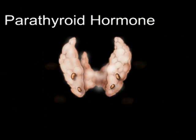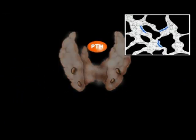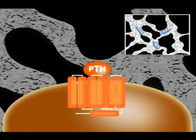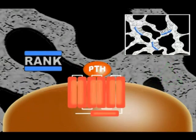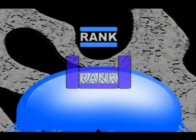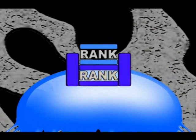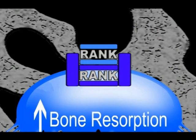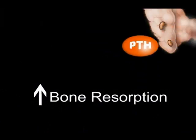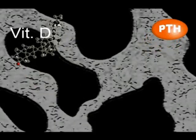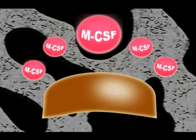Parathyroid hormone indirectly stimulates bone resorption by binding to receptors on osteoblasts, which stimulates the release of IL-6 and RANK ligand which promote resorption. The RANK ligand binds to the RANK receptor on the osteoclasts stimulating bone resorption. Bone resorption is also stimulated by parathyroid hormone and vitamin D. These two factors stimulate osteoblasts to release M-CSF, which promotes proliferation of osteoclasts.